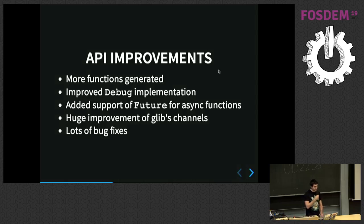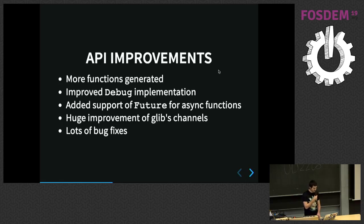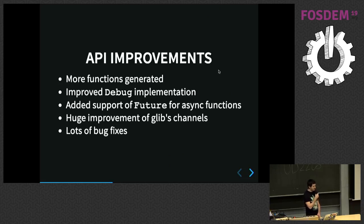Now the interesting part: API improvements. We have a lot more functions generated. We improved the debug implementation — Variant is now printing correctly, which was broken before. Someone last year asked about support for futures for async functions in Rust and gtk-rs — well, now it's there. We also added huge improvements to GLib channels on the main context type, and of course lots of bug fixes.